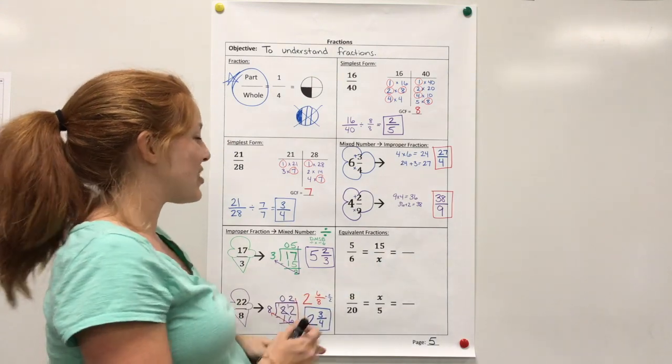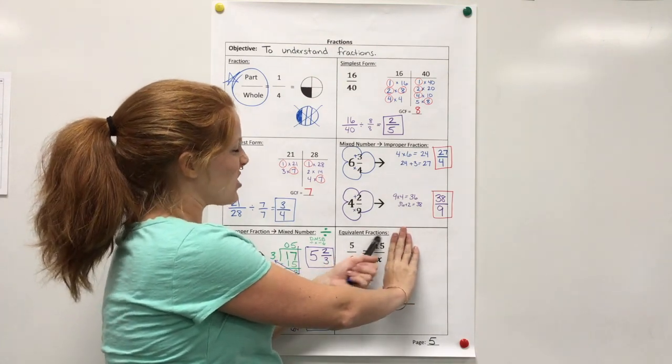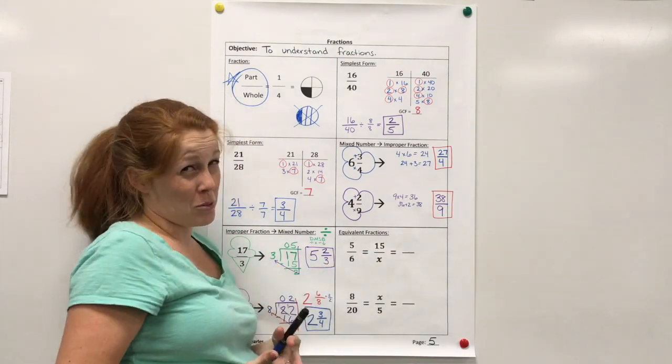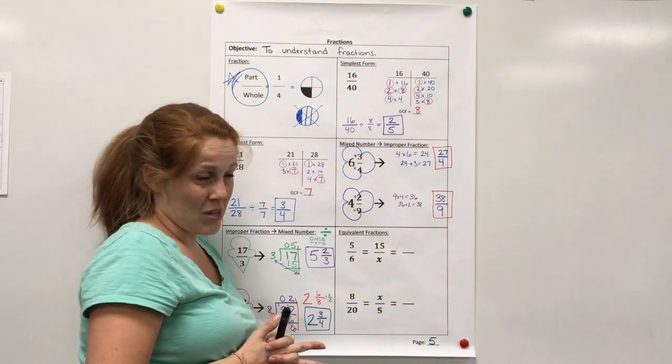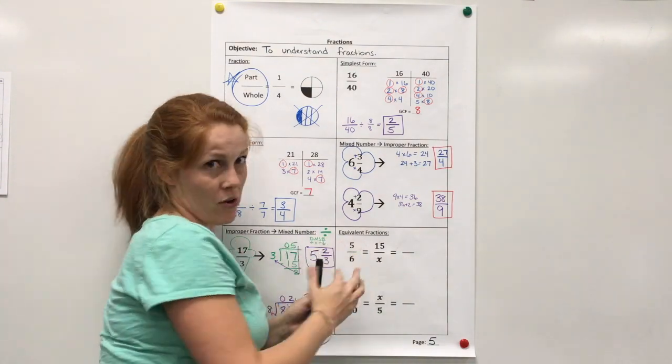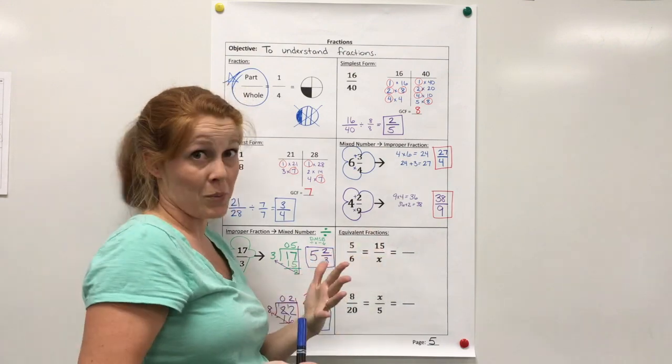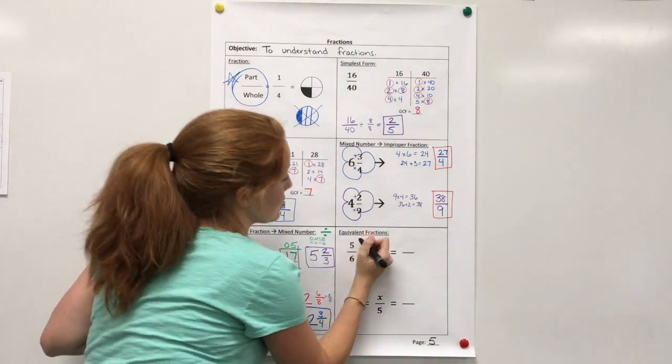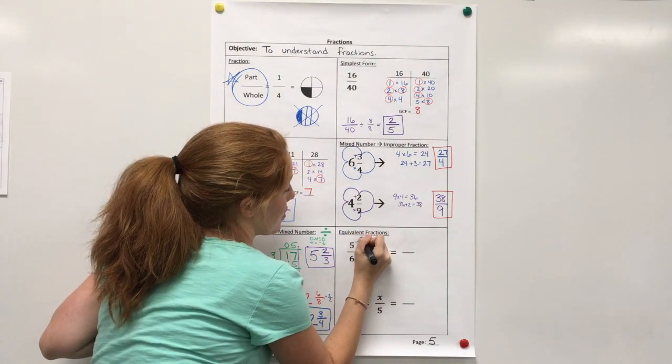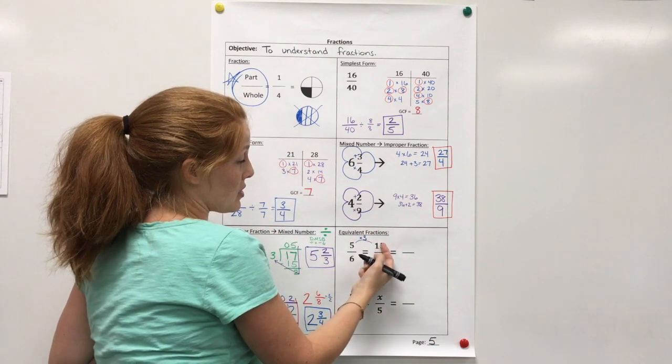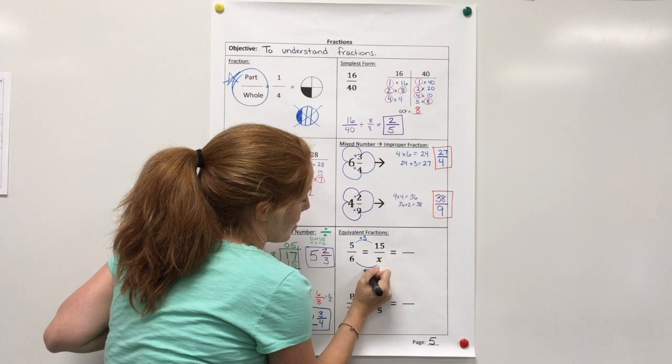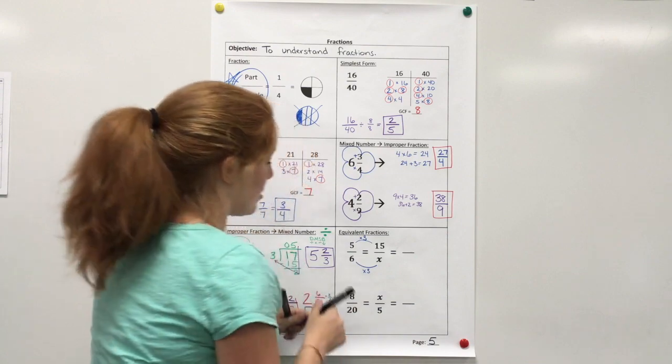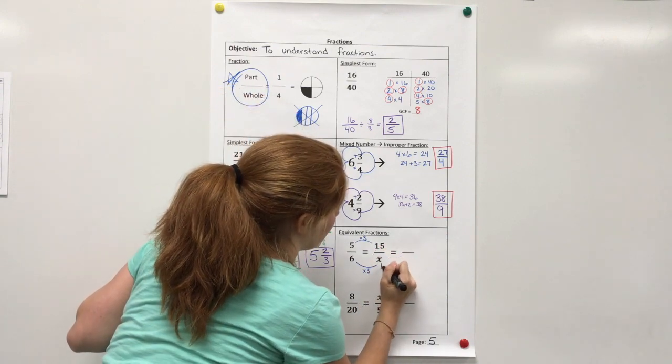All right, so what I need to do is, whatever I'm given, since I know both numerators, I need to figure out, how did I get to 15? Well, fractions, it's only multiplicative. You can't add or subtract something. You can only multiply or divide to get from one to the other. So, since it got bigger, I know I multiplied. So, let's see. 5, 10, 15, that's 3. So, then this, right here, to get from there to there would be times 3. Well, if I did times 3 on the top, then I have to do the same thing to my denominator. So, this would be times 3. So, 6 times 3, that would make x 18.